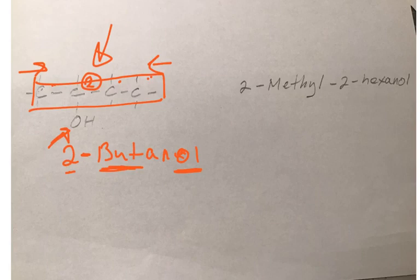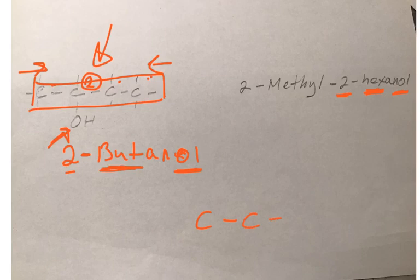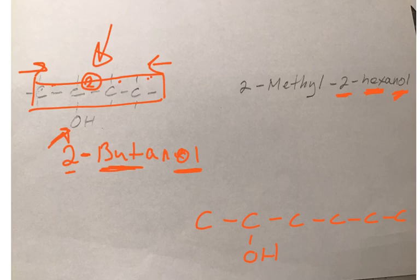So let's do this guy over here: 2-methyl-2-hexanol. Hex means six carbons, OL means I have an OH group somewhere, and that OH group is at carbon number two. So we draw six carbons, and on carbon number two we put an OH group.